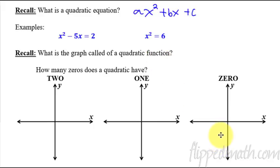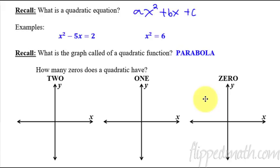So, what's the graph called of a quadratic function? Remember from our unit 10 — parabola, although some students pronounce it parabola, which I think is hilarious. So, how many zeros does a quadratic have? If you remember that, what does a parabola do?